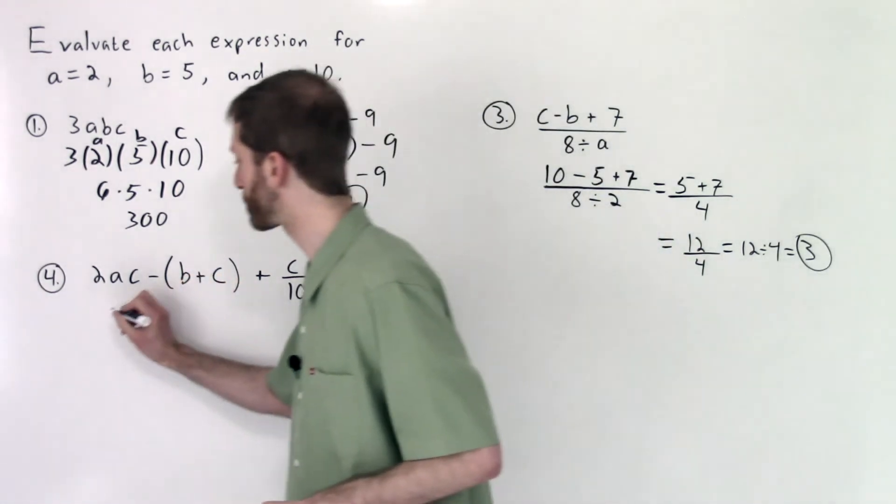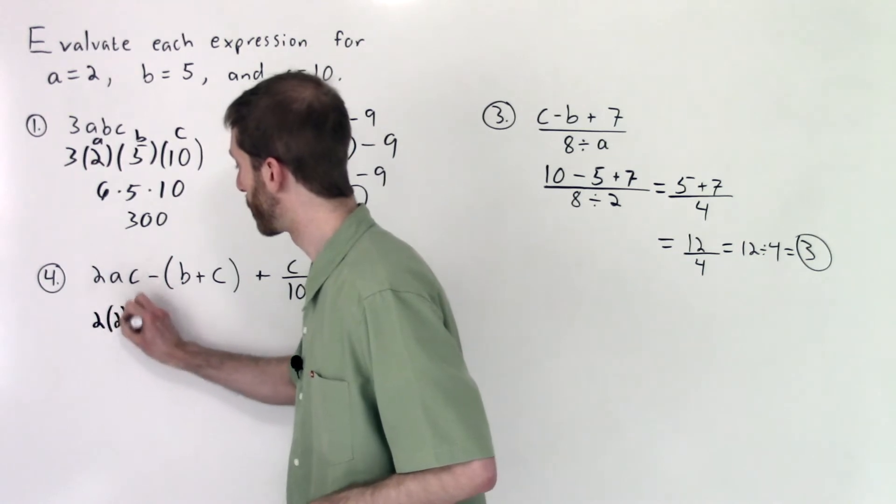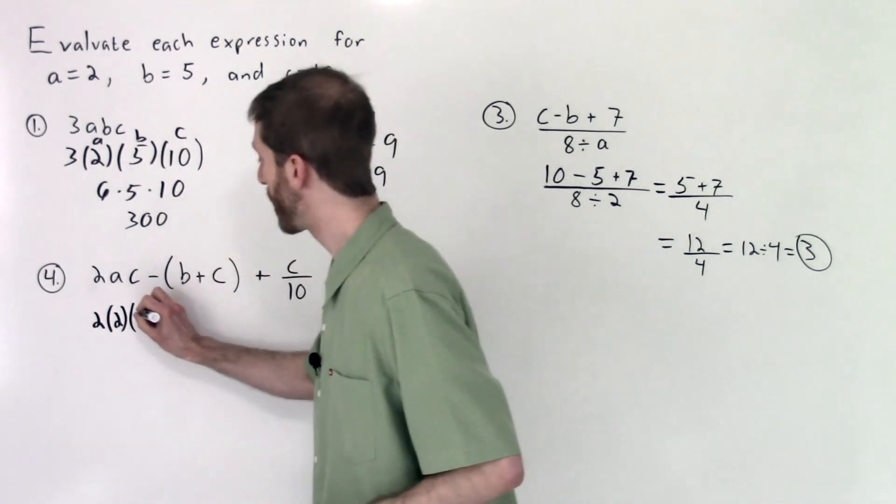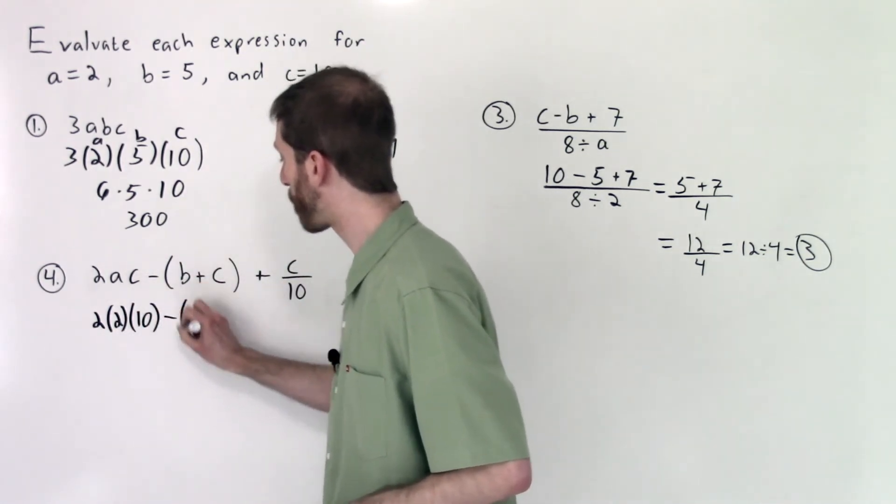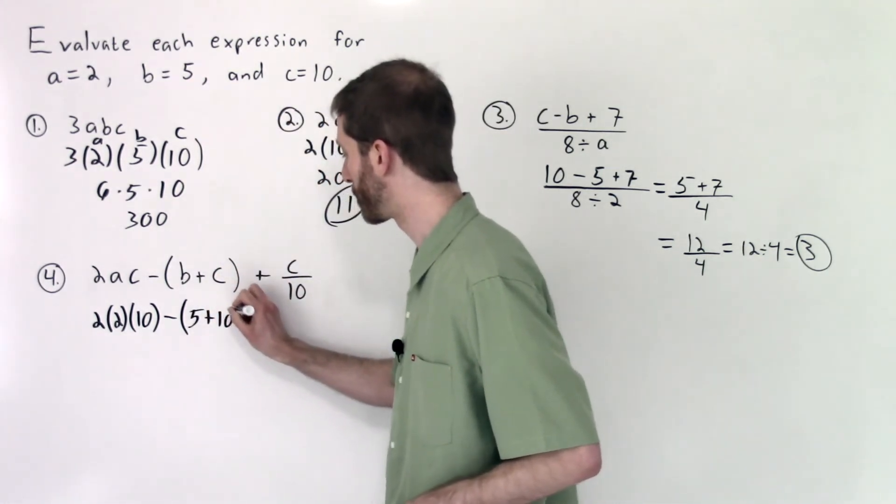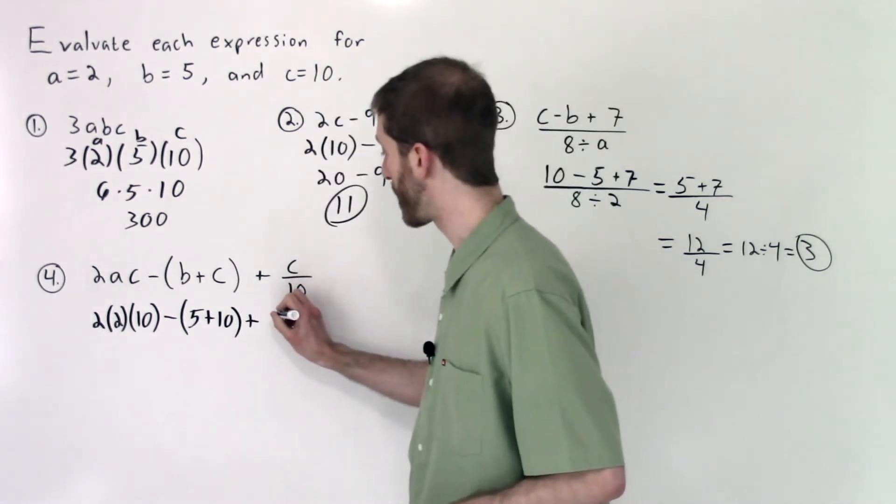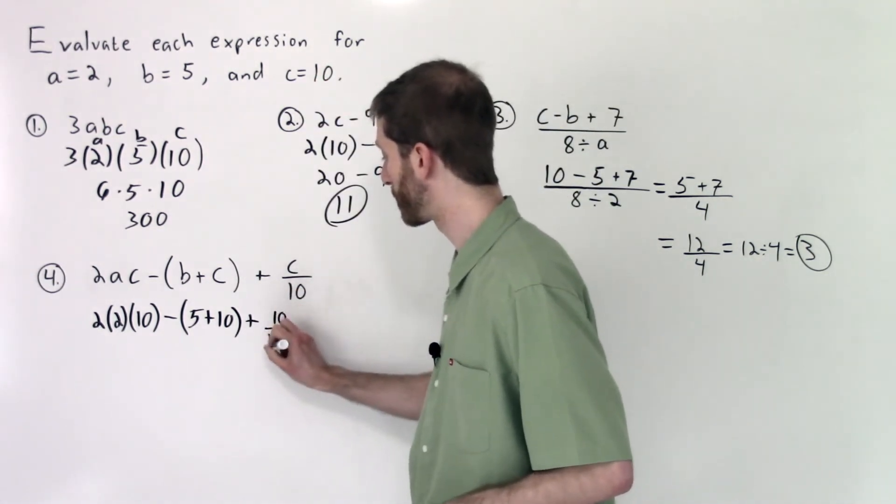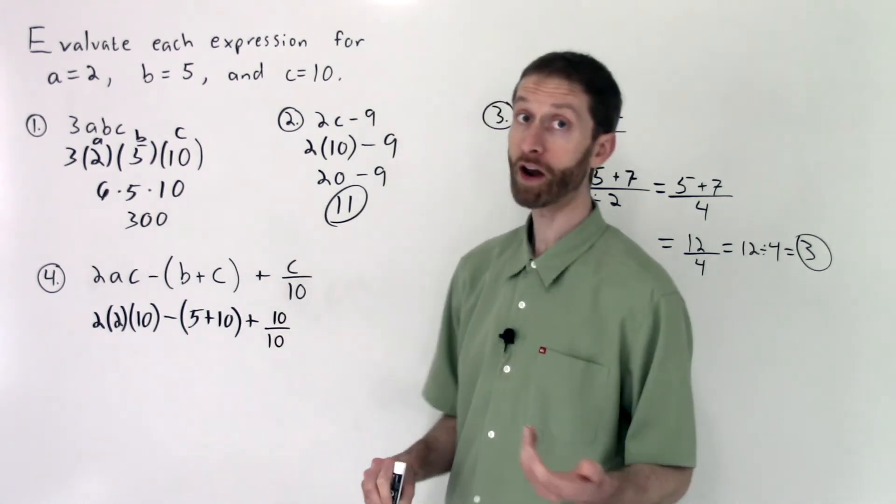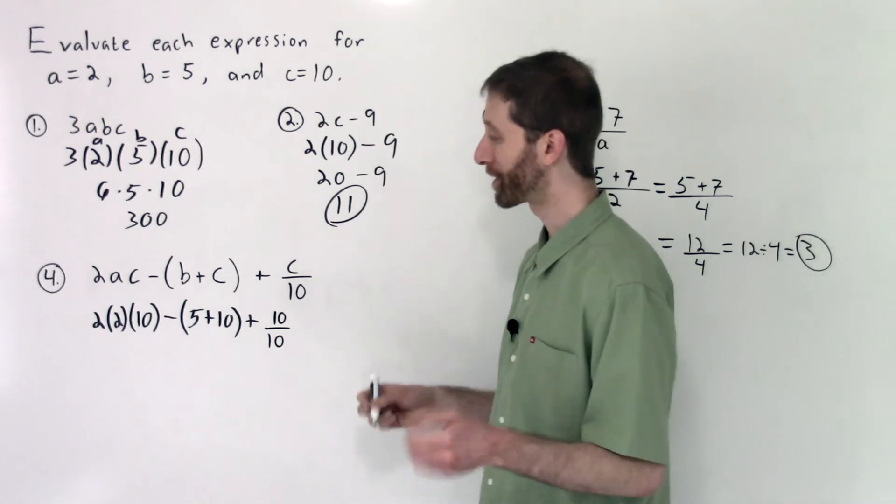2 times A times C, that's going to be 2 times A is going to be 2, times C is going to be 10, minus the quantity of B plus C or 5 plus 10. We're not done yet. Plus let's evaluate for C, that's going to be 10 over 10. There you have it. Now that we've got all of our evaluations done, we're going to simplify a bit more.